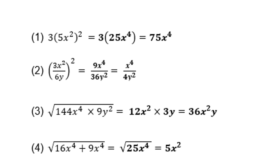For the next one, you must first square: (3x squared) squared is 9x to the power 4, and (6y squared) squared is 36y squared. Then you cancel your like terms and the answer is x to the power 4 over 4y squared.